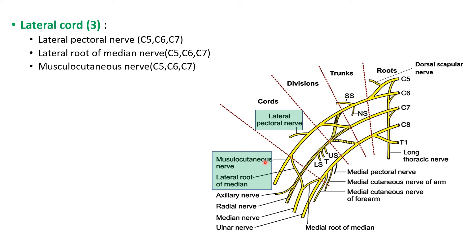The root value of lateral cord branches is C5, C6, and C7, because the lateral cord is formed by the anterior division of the upper trunk (containing C5 and C6 fibers) and the anterior division of the middle trunk (containing C7 fibers).